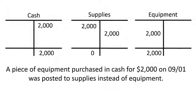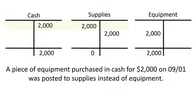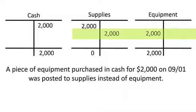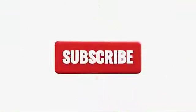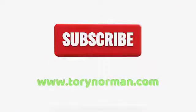As you're looking at correcting entries, it can be easy to get confused about what the correcting entry is supposed to look like. The easiest approach is to come back to T-accounts, look at what should have happened, then analyze the original transaction. It becomes easy to see where the debits and credits need to be so that the end result — when the two transactions are totaled — equals exactly what the transaction should have been in the first place.